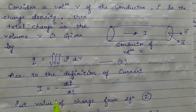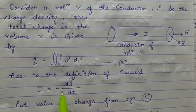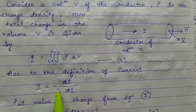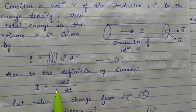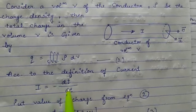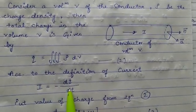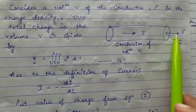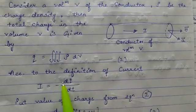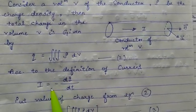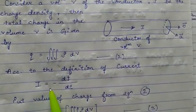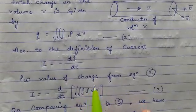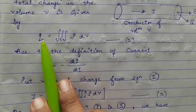I is equal to negative dQ divided by dt. The negative sign indicates that there is an outflow of charge from the cylindrical surface — that's why I'm writing the negative sign here.